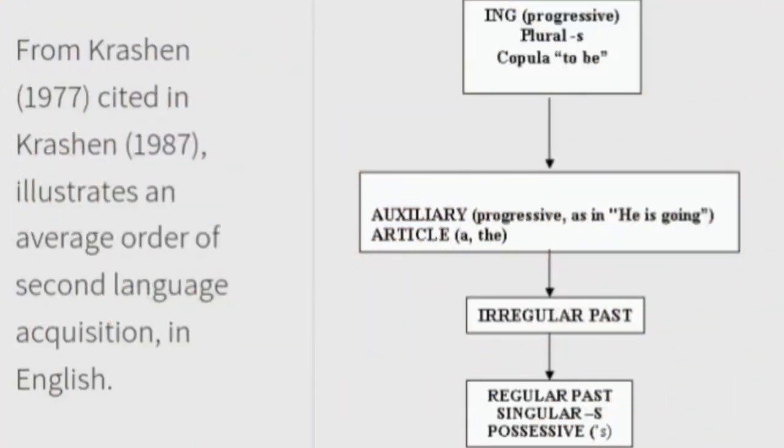From Krashen (1977), cited in Krashen (1987), the following illustrates an average order of second language acquisition in English.